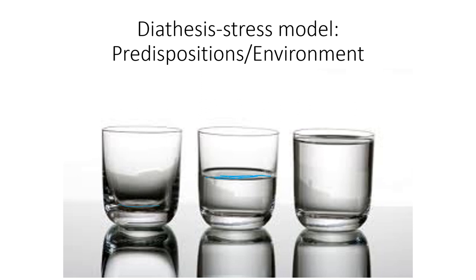The starting water level represents your genetic predisposition — the genes you're born with. Some people, like the one on the left, start with a lot of resilience and are really resilient to depression. Some, like the one in the middle, are in between. And some, like the one on the right, have a high predisposition to depression — it runs in their family. Then we have environmental factors that either pour water into these glasses or take water out. Just because the person on the right has a high predisposition does not mean they're going to have depression — maybe they have a good social network and no challenges in life, so their water level actually goes down and they never display depression.